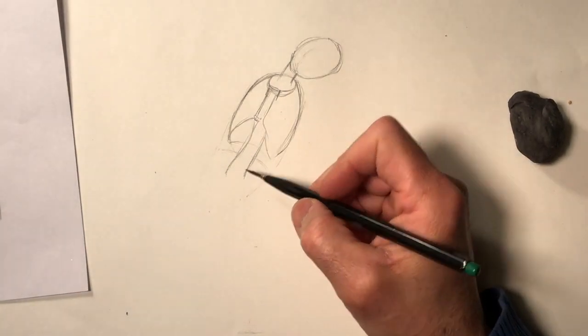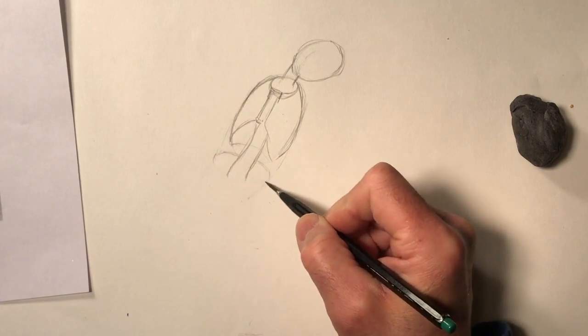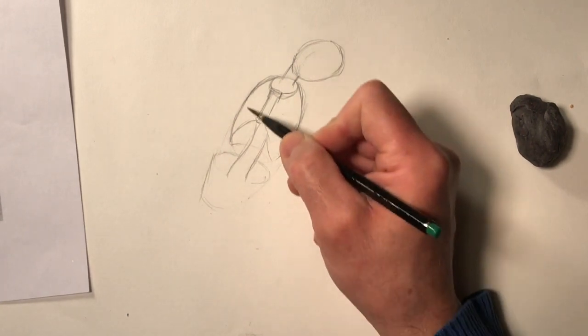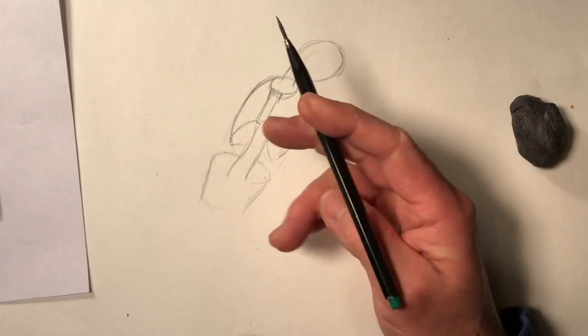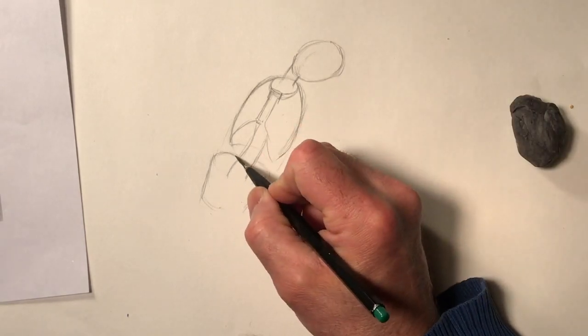So the pelvis is a bucket. I block in my bucket in here, and then the width is the same as the rib cage. And the height is about the same as the head, so I'm happy with that.